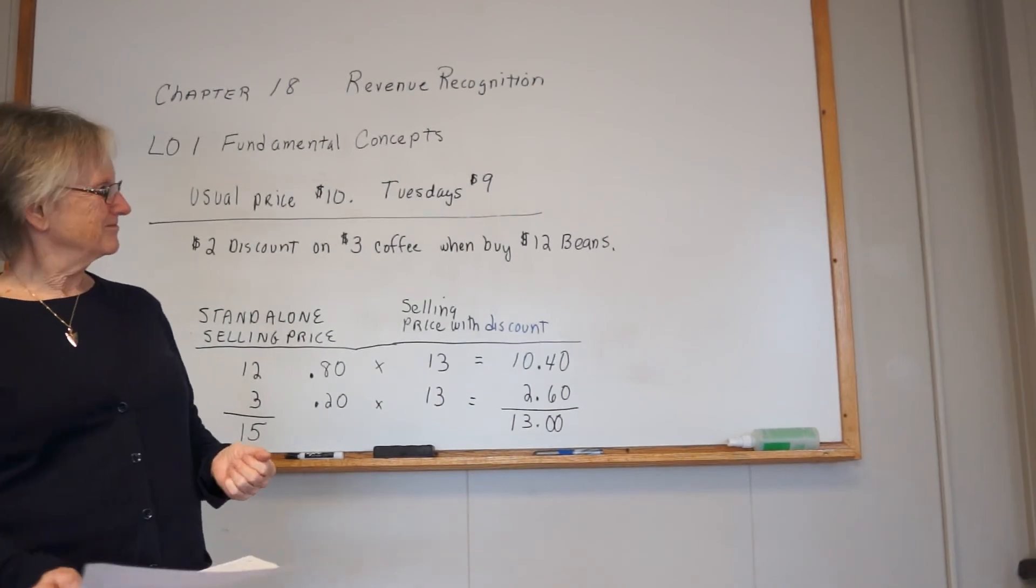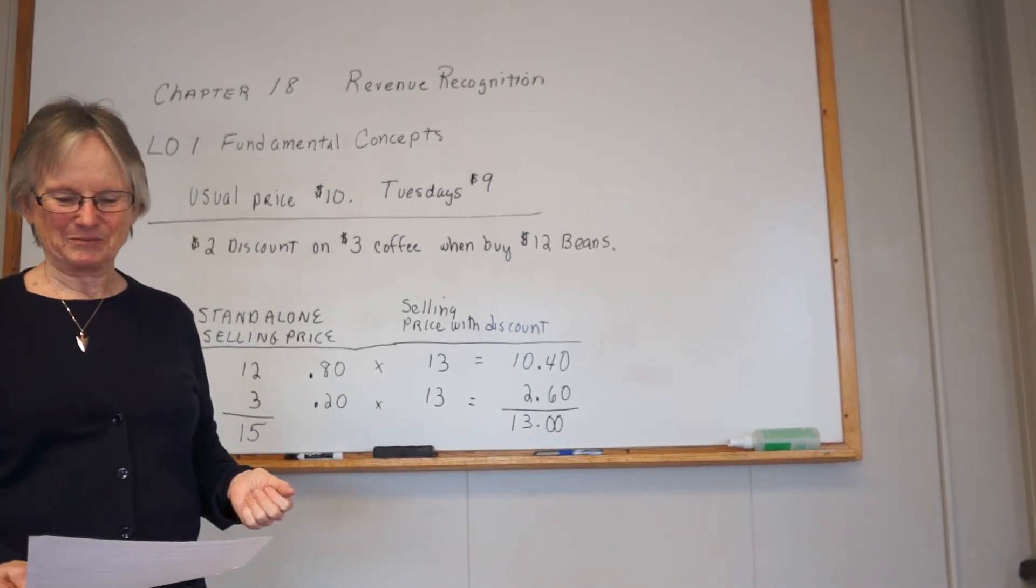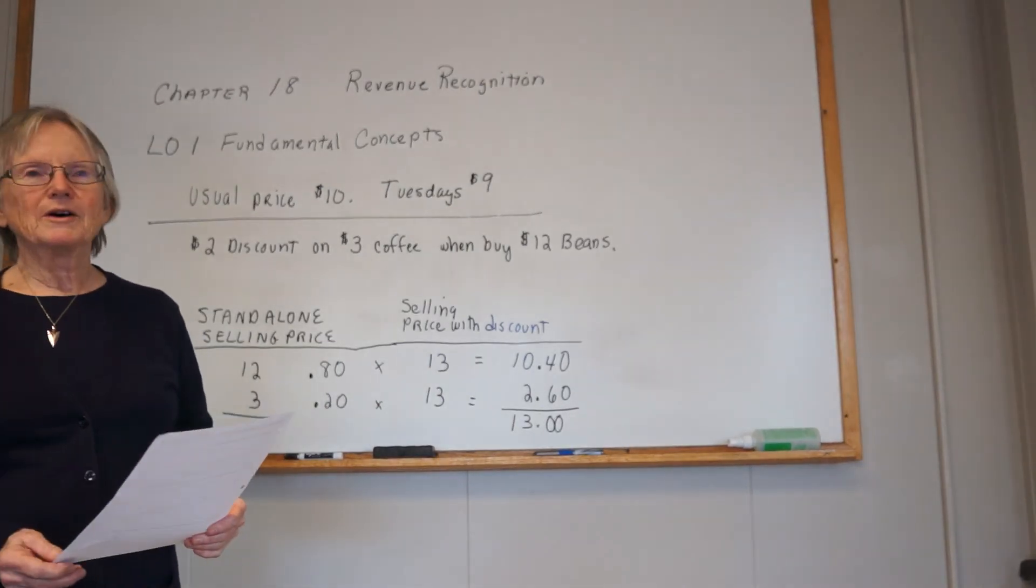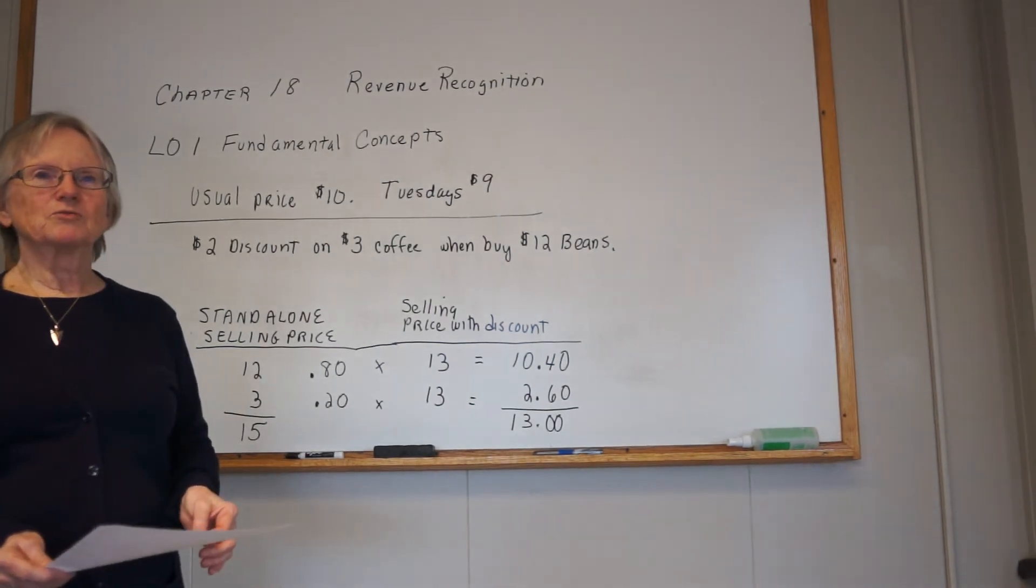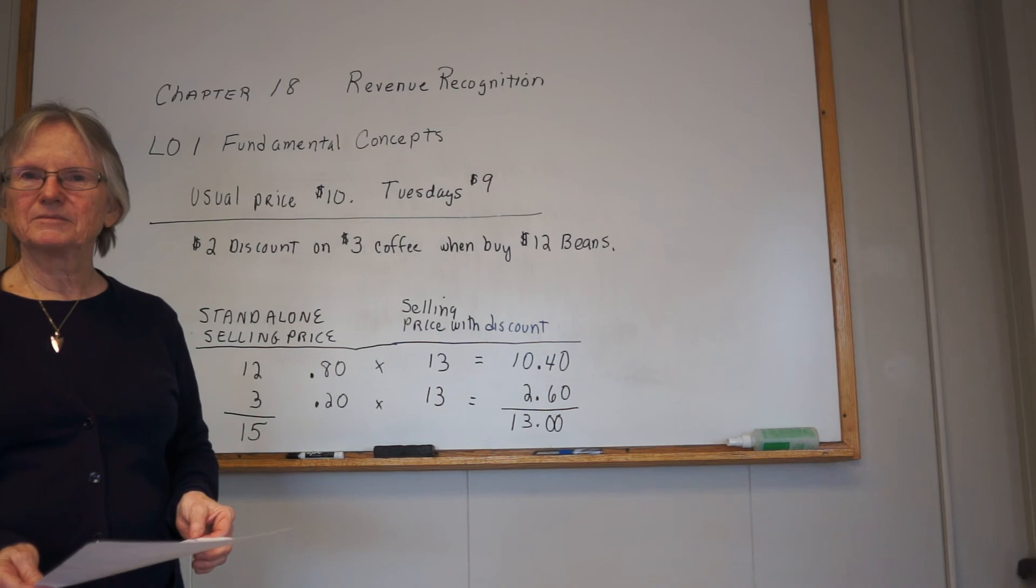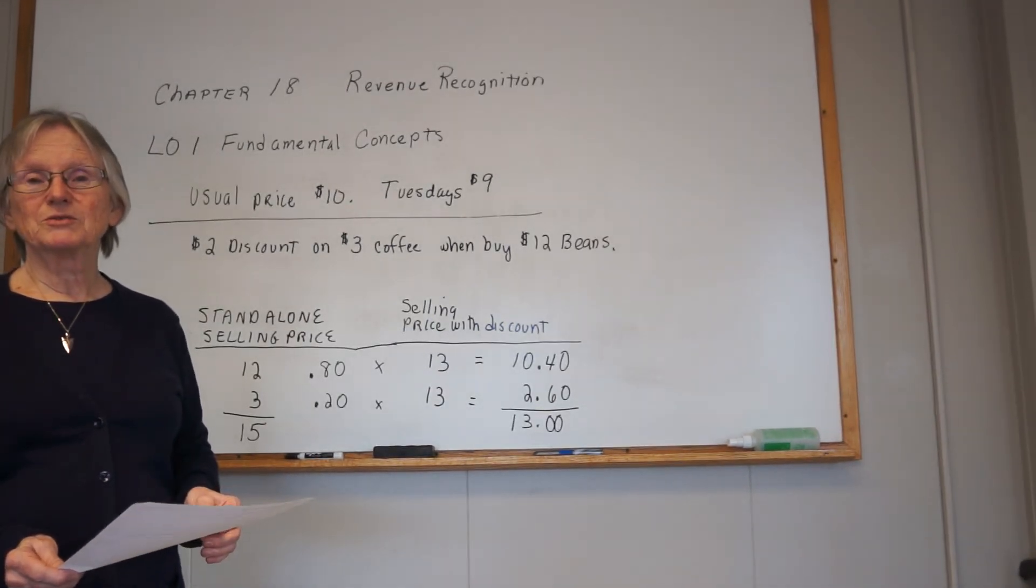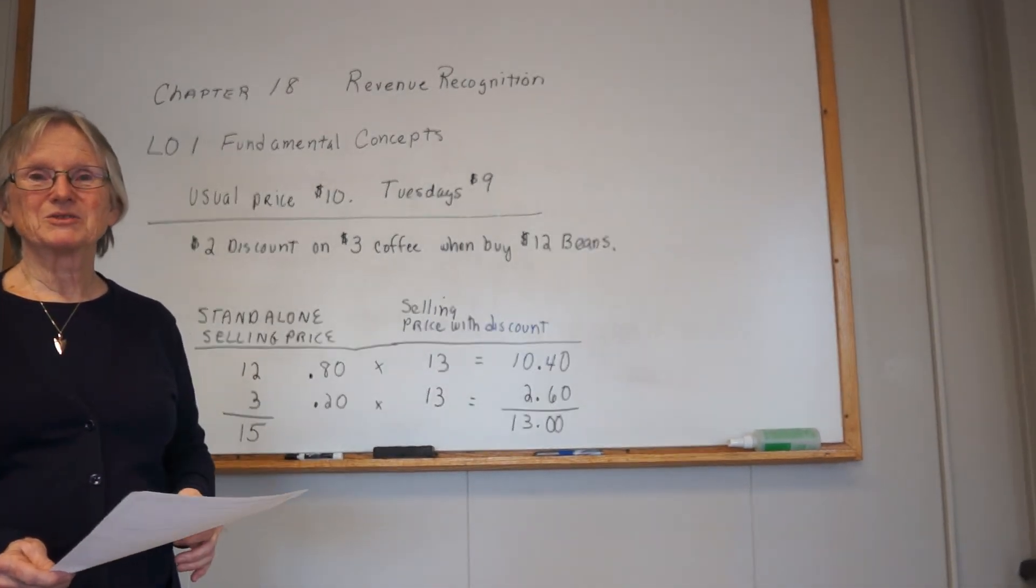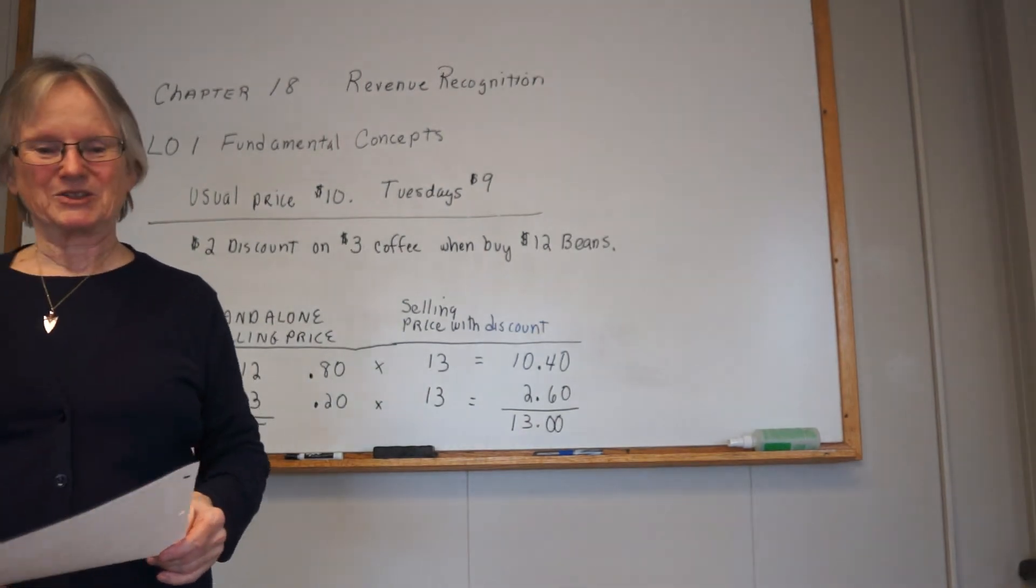In this case, the coffee and beans. That wraps up learning objective one, and we'll move on to learning objective two, which gets into a lot of the more complex issues associated with revenue recognition.